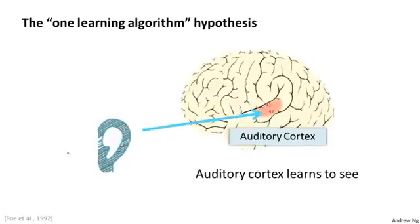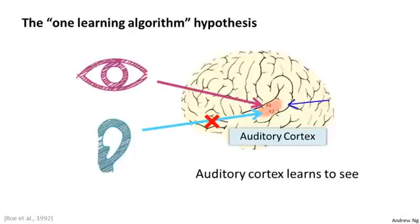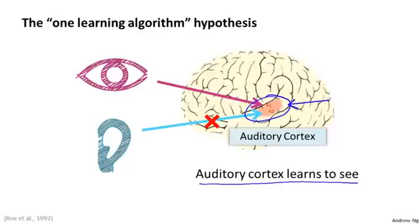This is just a hypothesis, but here's some of the evidence. This part of the brain — that little red part — is your auditory cortex. The way you're understanding my voice now is that your ear is taking the sound signal and routing it to your auditory cortex, and that's what's allowing you to understand my words. Neuroscientists have done fascinating experiments where they cut the wire from the ears to the auditory cortex and rewire an animal's brain so that the signal from the eyes, from the optic nerve, eventually gets routed to the auditory cortex. If you do this, it turns out the auditory cortex will learn to see — in every single sense of the word. The animals can perform visual discrimination tasks, look at images, and make appropriate decisions based on those images.